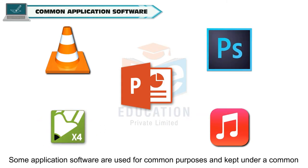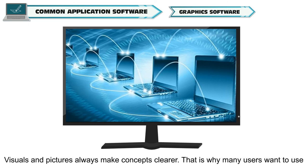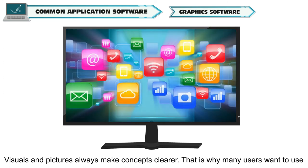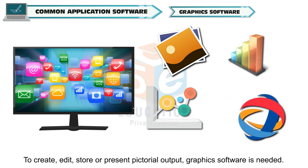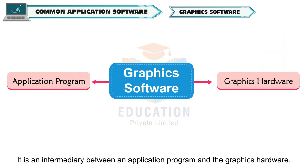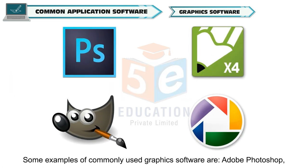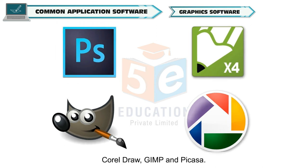Some application software are used for common purposes and kept under a common name. Some of these are graphic software. Visuals and pictures always make concepts clearer. That is why many users want to use images in different forms, like photographs, charts, diagrams, or logos. To create, edit, store, or present pictorial output, graphic software is needed. It is an intermediary between an application program and the graphics hardware. Some examples of commonly used graphic software are Adobe Photoshop, CorelDRAW, GIMP, and Picasa.